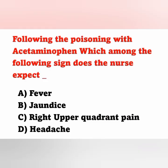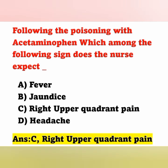Next question: Following poisoning with acetaminophen, which sign does the nurse expect? Option A: Fever, Option B: Jaundice, Option C: Right upper quadrant pain, Option D: Headache. The correct answer is Option C — right upper quadrant pain, because acetaminophen (paracetamol) poisoning can damage the liver. The child may experience right upper quadrant pain first; jaundice may be a later symptom.